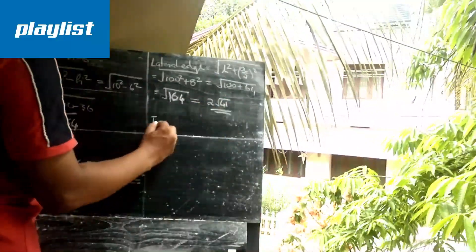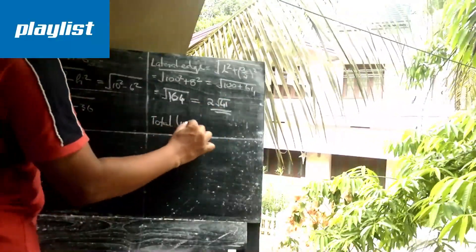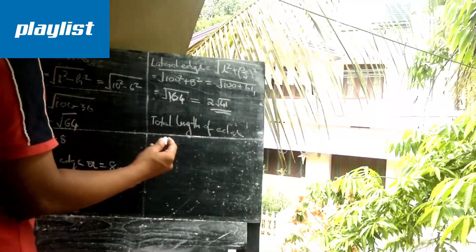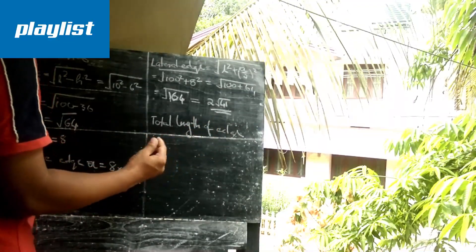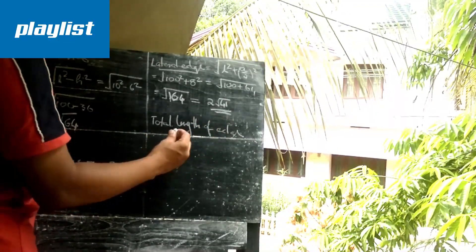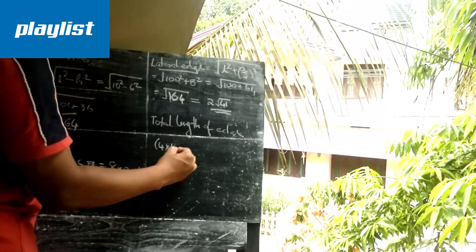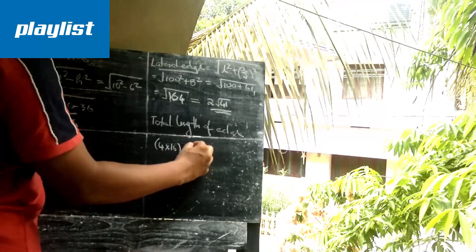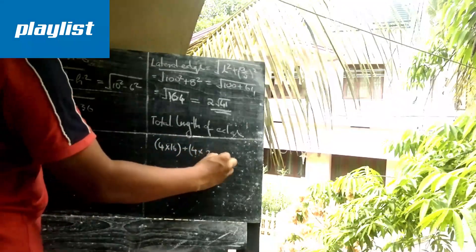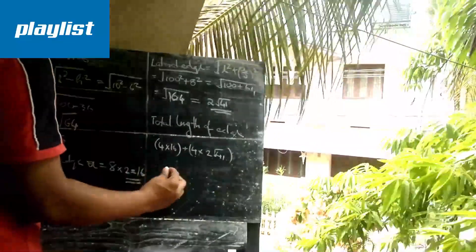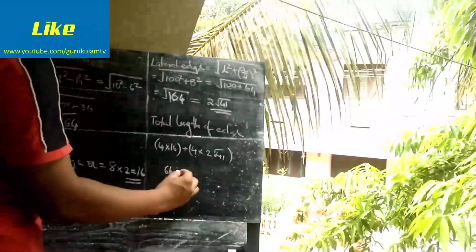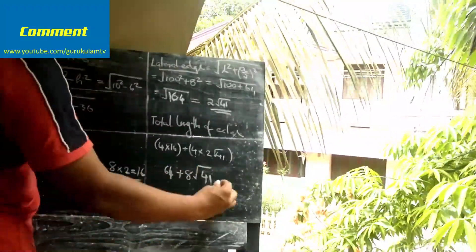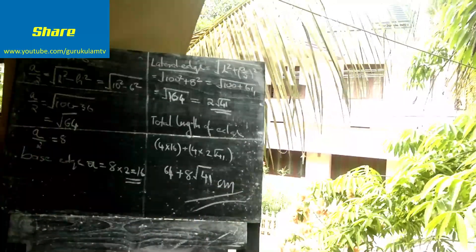We have the total edge. We have the base edge and the lateral edge. We have 4 and 16 plus 4 and 2 root 41. That is, 64 plus 8 root 41 cm. That is, we have the total length of edge.